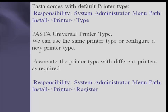To define PASTA in EBS, log in to Oracle Home or the Oracle Home personal page and click under the responsibility on System Administrator. You will get the menu path Install > Printer > Type. PASTA comes with a default printer type — the PASTA Universal Printer Type. You can use the same printer type or configure a new one, and associate the printer type with different printers as required.